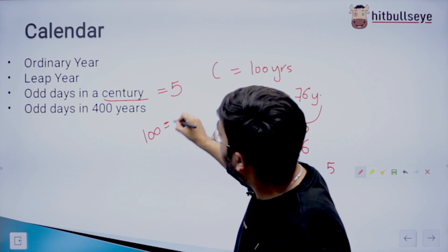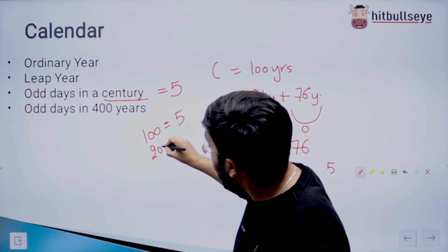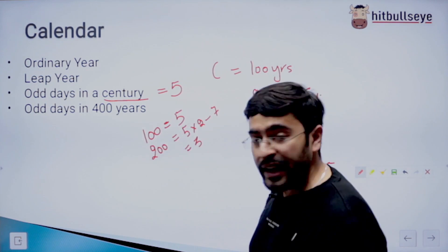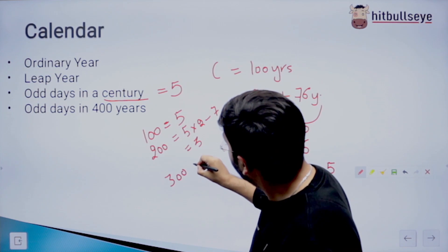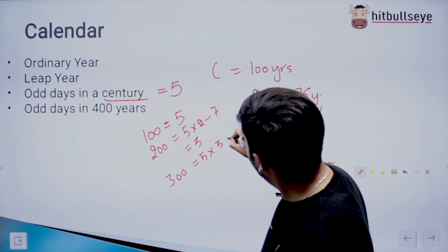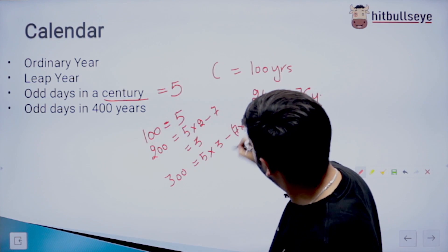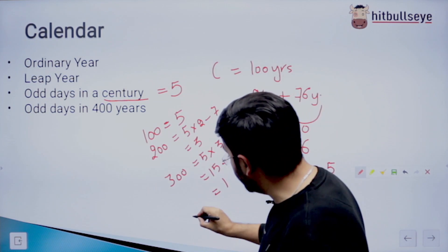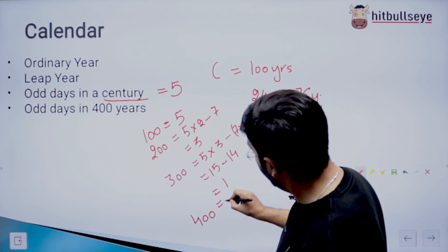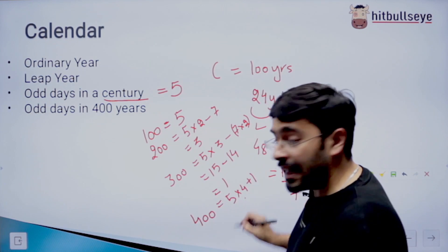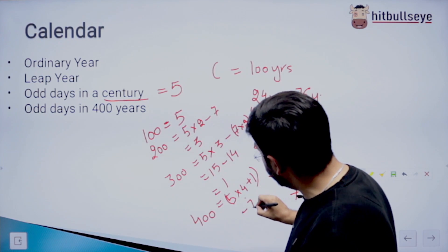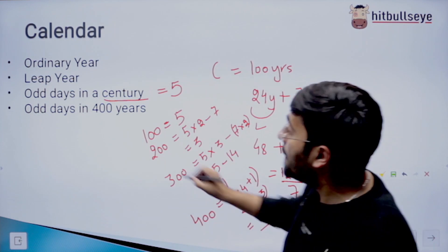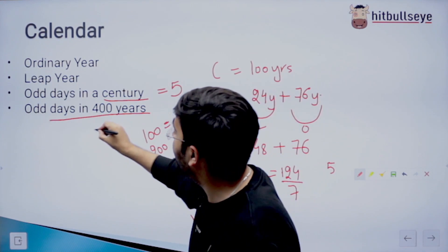Meaning that in 100 years, there are 5 odd days. In 200 years, there are 5 into 2 minus 7, meaning 3 odd days. In 300 years, there are 5 into 3 minus 7 into 2, which is 15 minus 14, 1 odd day. And last is 400 years, which gives 5 into 4 plus 1, the 1 of the leap year, minus 7 into 3. That gives 20 plus 1, 21 minus 21, 0. Meaning that the number of odd days in 400 years is 0.